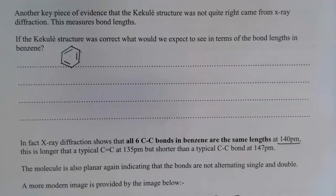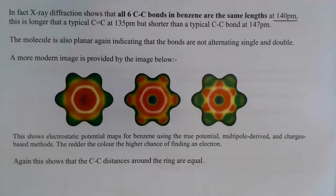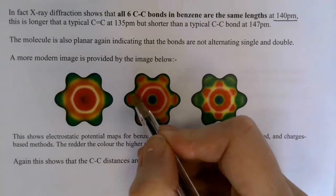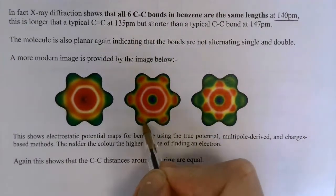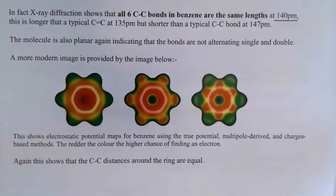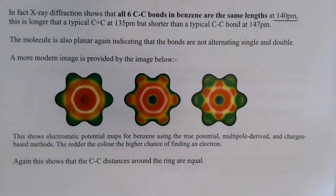The more modern images we've provided for you on page four show the symmetry of the molecule quite nicely. You can see there that the bond lengths between the areas of electron density are all the same. It's a nice symmetrical molecule and this is another piece of evidence that shows that we have this delocalized ring of electrons.